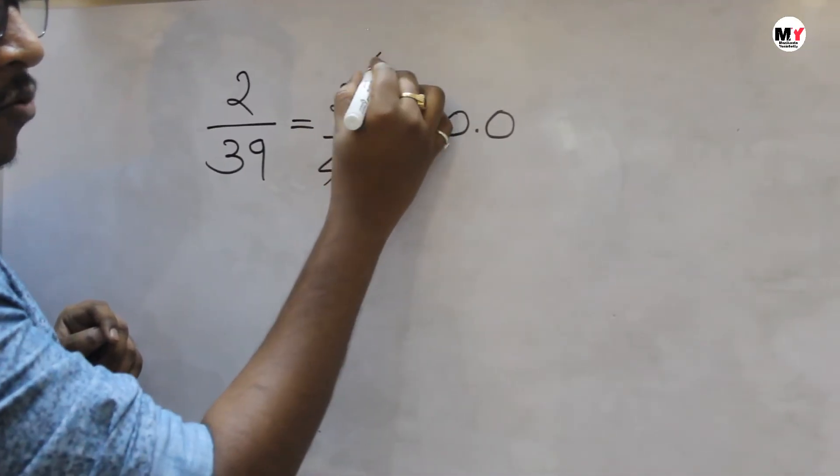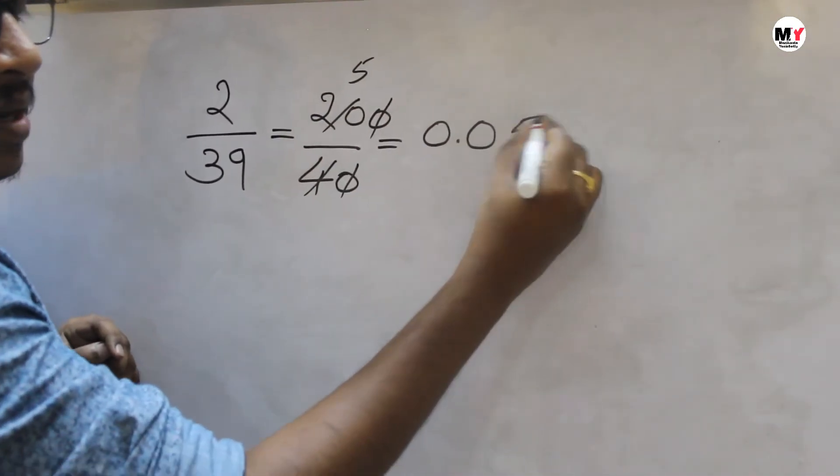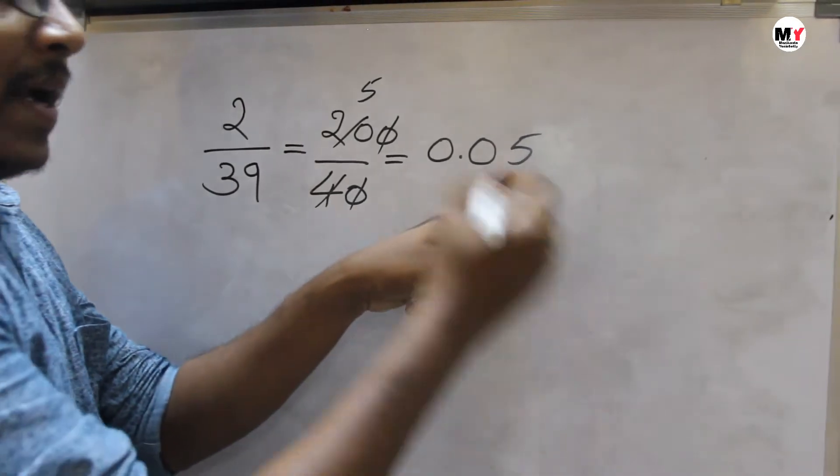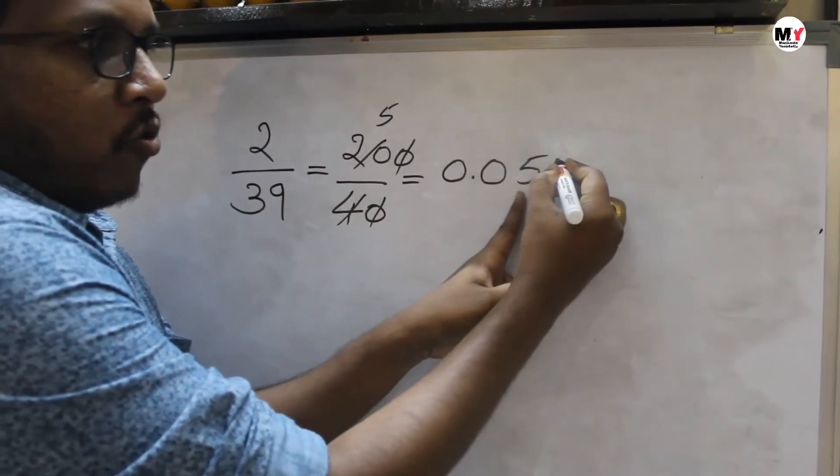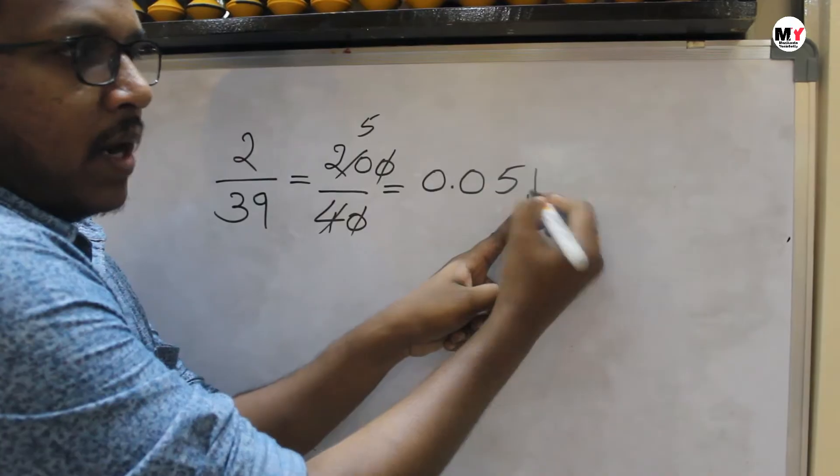So 0, 0 gets cancelled. 4, 1's are 4, 5's are 20. Now this you start dividing with the 4. 4, 1's are 4, reminder is 1.